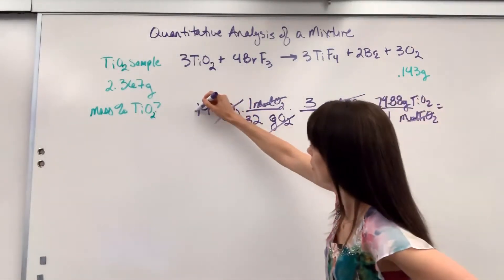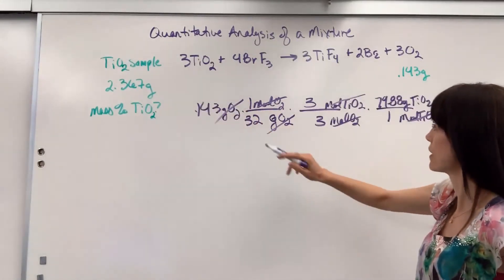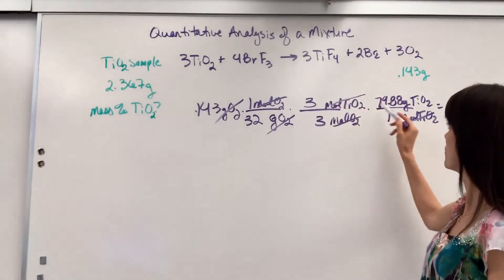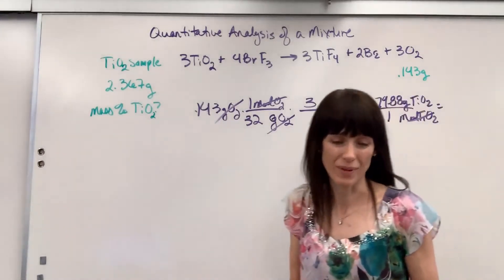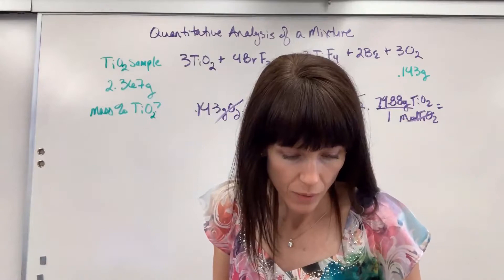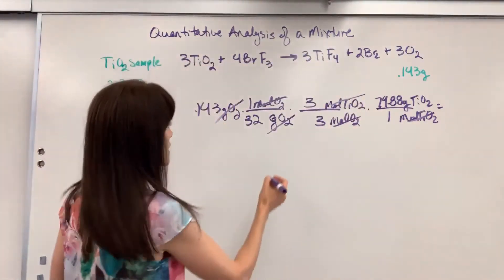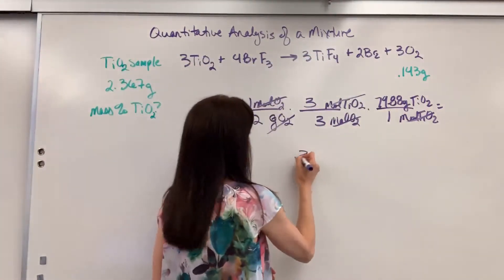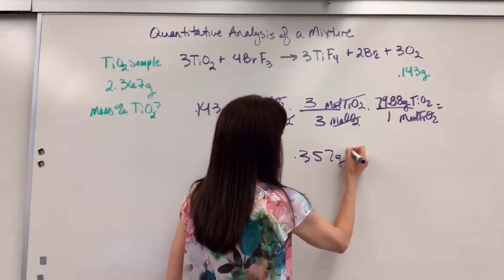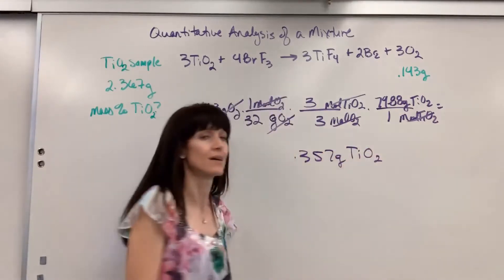Okay. So if we do our math, 0.143 divided by 32 times three divided by three times 79.88, we are going to get 0.357, put it here, 0.357 grams of titanium four oxide.